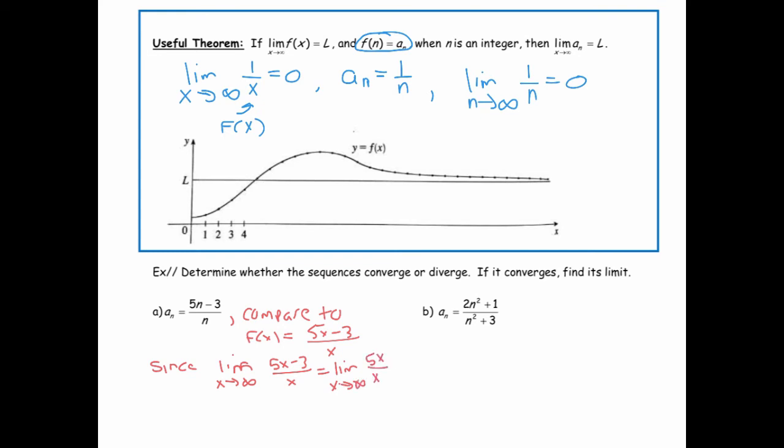We know that the limit as x goes to infinity of (5x - 3)/x is just the limit as x goes to infinity of 5x/x - 3/x, which equals the limit as x goes to infinity of 5 - 3/x. As x goes to infinity, we can see that goes to 5 - 0, which is just 5. We can say that a of n goes to 5 as well.